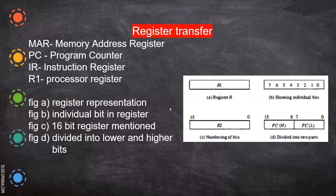Now we will look at a few registers. One is the Memory Address Register, called MAR, where the address of memory locations will be placed. If you are going to read something from memory, you must inform from which location it has to be read — that memory location will be placed in MAR. When writing also, the target memory location is given and placed in MAR.